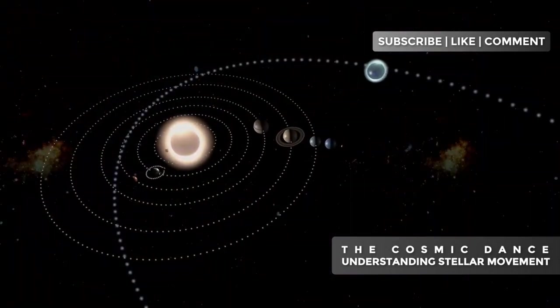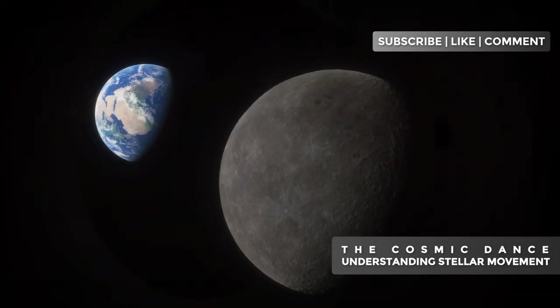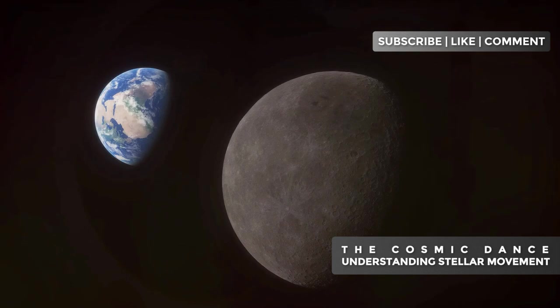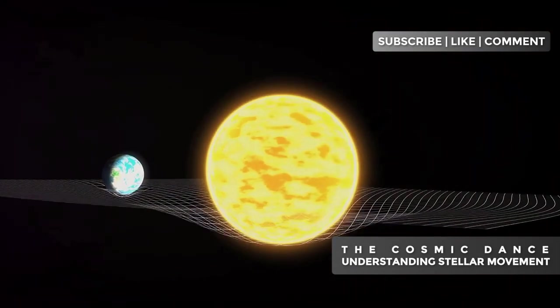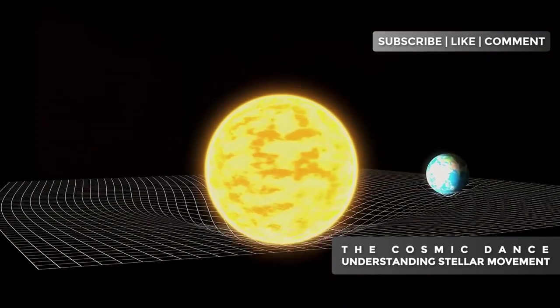The eccentricity of an orbit is a measure of how much it deviates from a perfect circle. A circular orbit has zero eccentricity, while a highly elliptical orbit has an eccentricity close to one. The sun, for example, has an orbital eccentricity of about 0.07, which means its orbit is slightly elliptical.